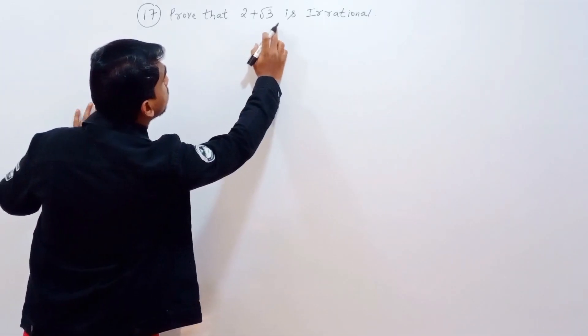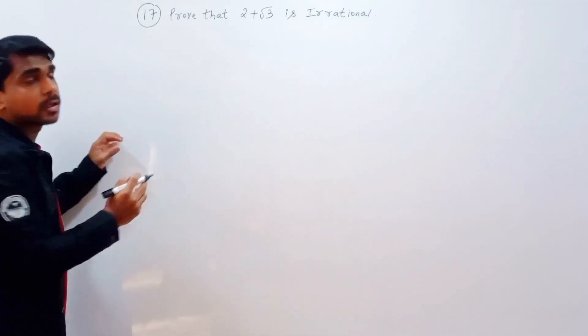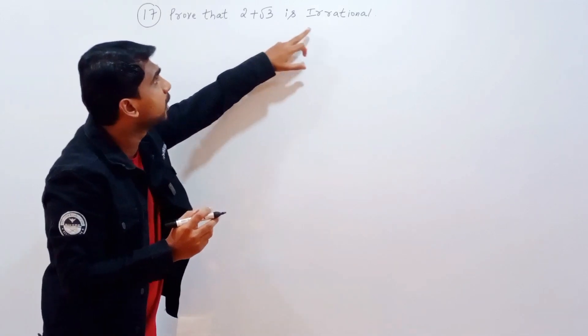17th question. Prove that 2 plus root 3 is irrational. Now we again prove 2 plus root 3 is irrational.